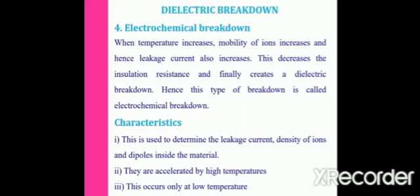Electrochemical breakdown is used to determine the leakage current density of ions and dipoles inside the material. It is also accelerated by high temperature, and it occurs only at lower temperatures.